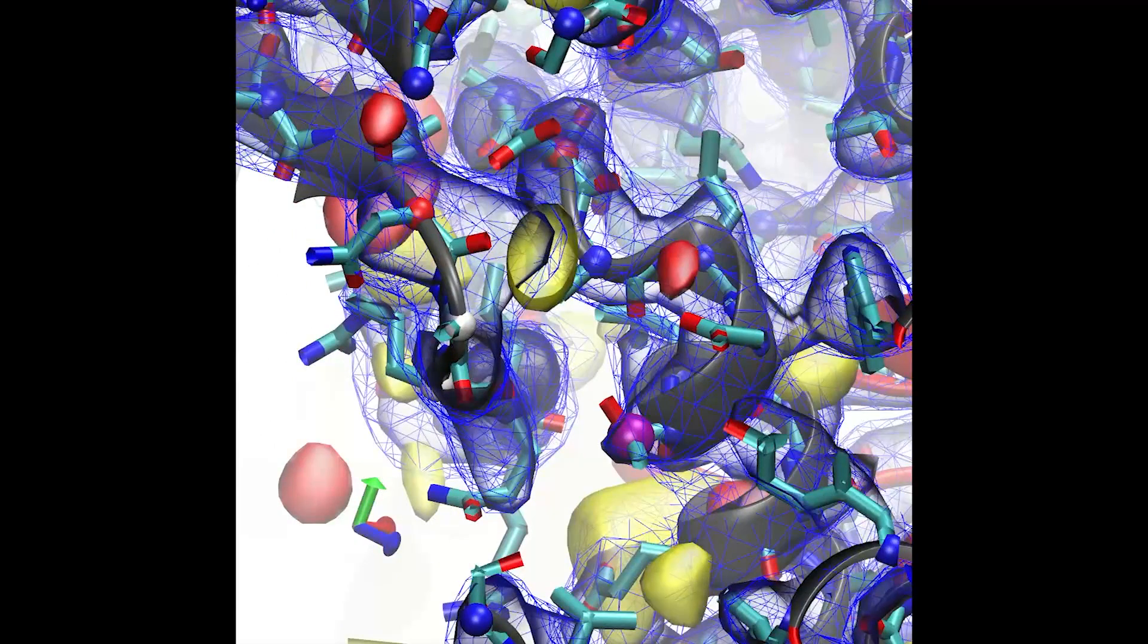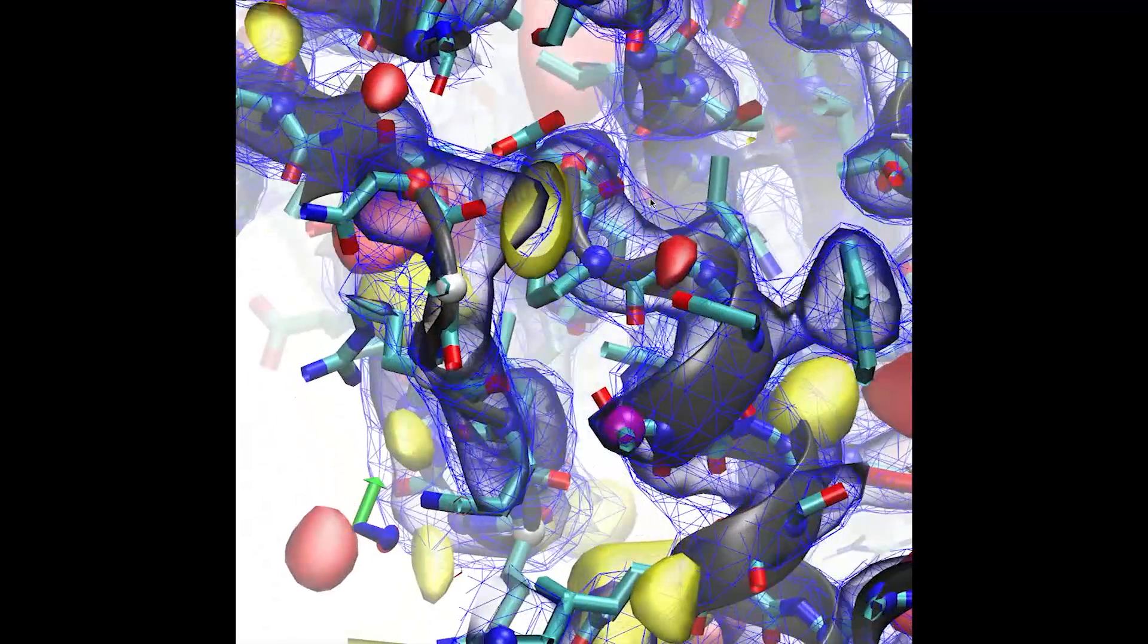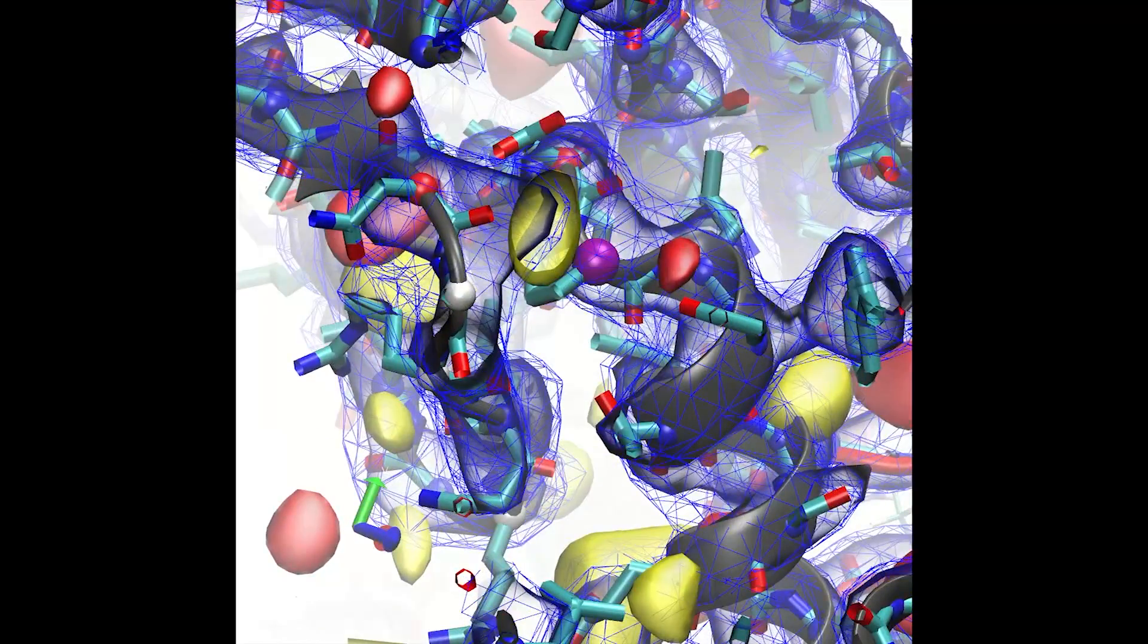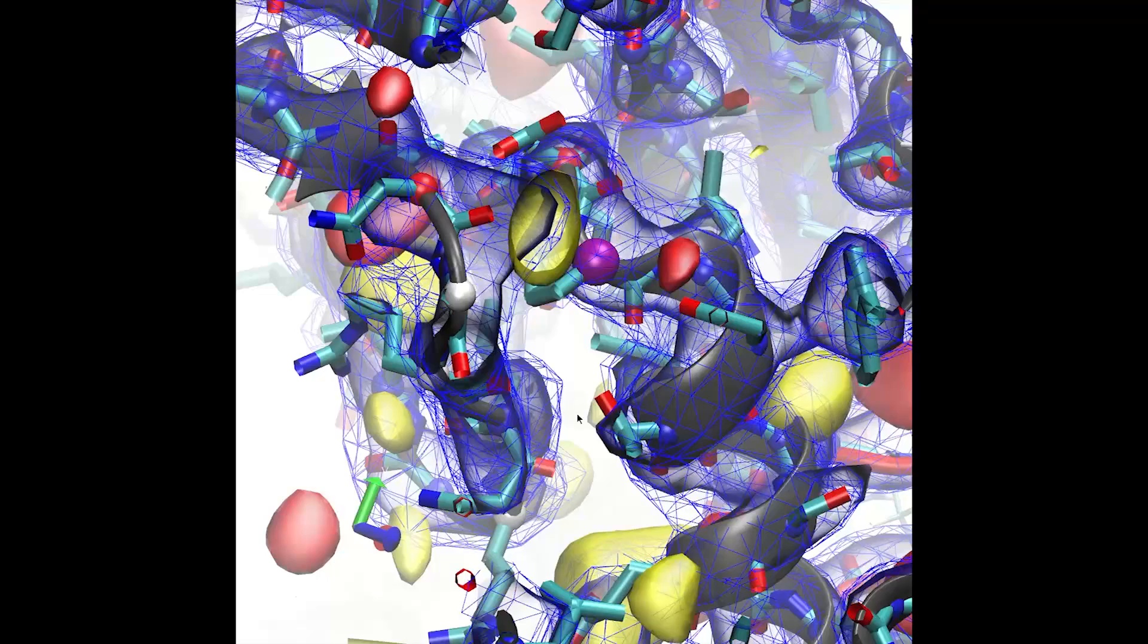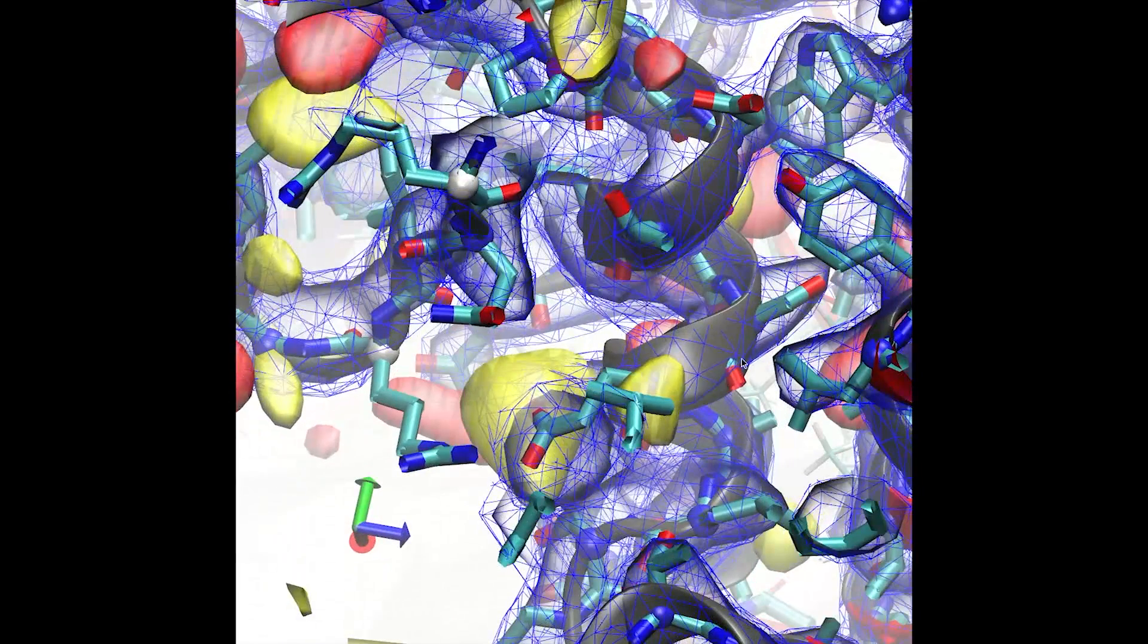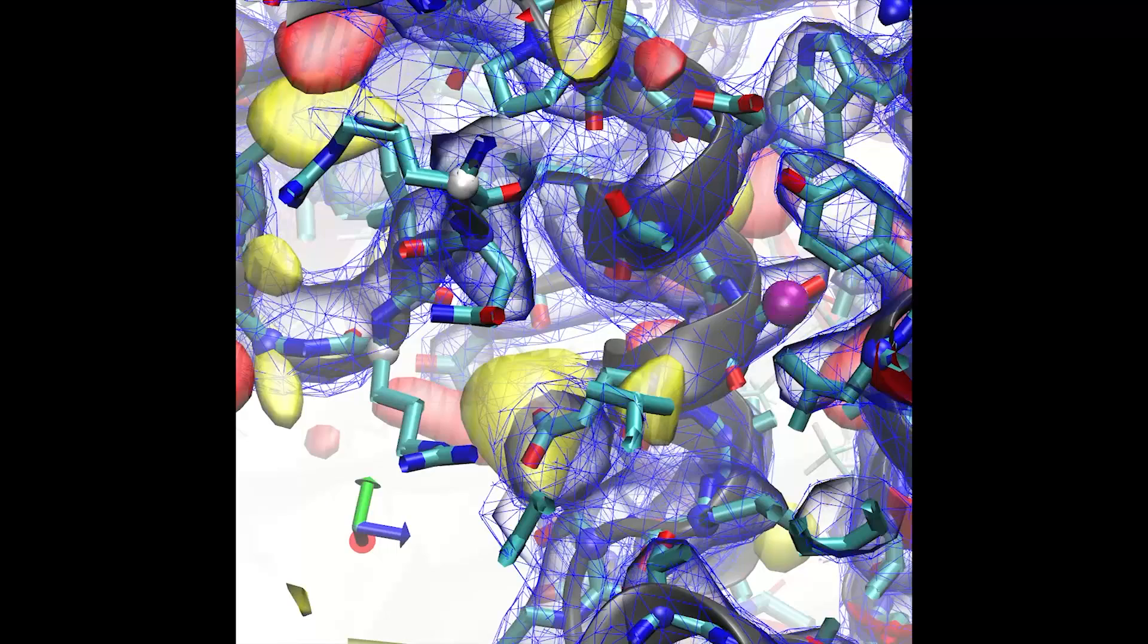The simulation can be paused at any time to take stock, save snapshots, or as I'm doing here, define tasks for the helper scripts. In this case I'm defining this short region as an alpha helix, and the simulation will continue pushing towards this conformation until I tell it to stop.